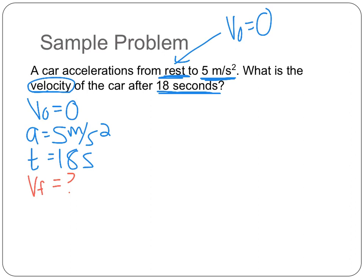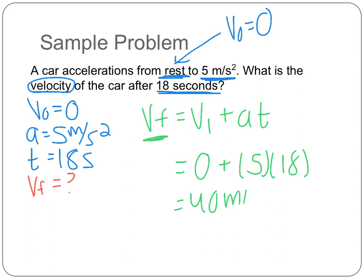Well, I don't have delta X, so I need to use my Vf equals Vi plus A, T equation. Now I'm solving for Vf, so I do not have to rearrange. All I need to do is plug in my numbers. So 0 plus 5 times 18 to get us 90 meters per second.